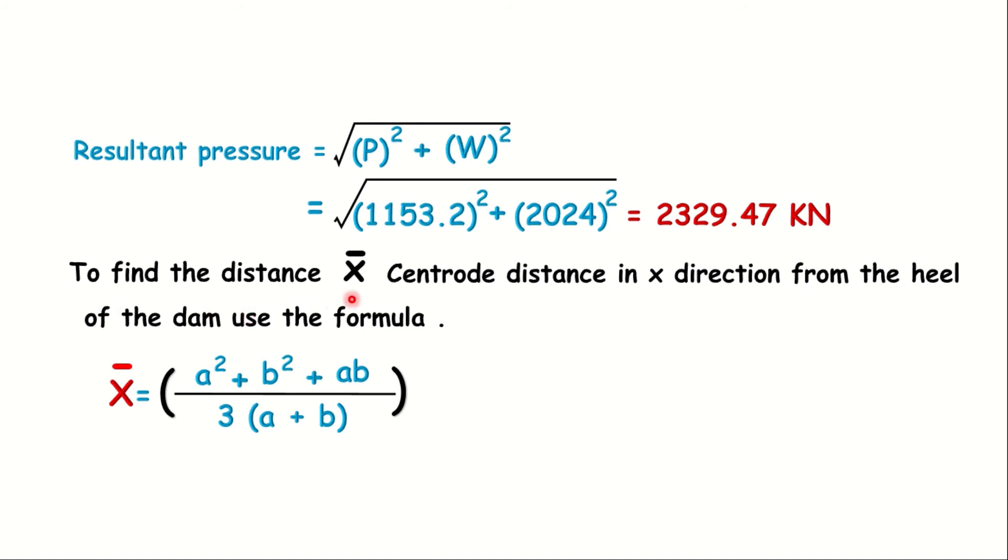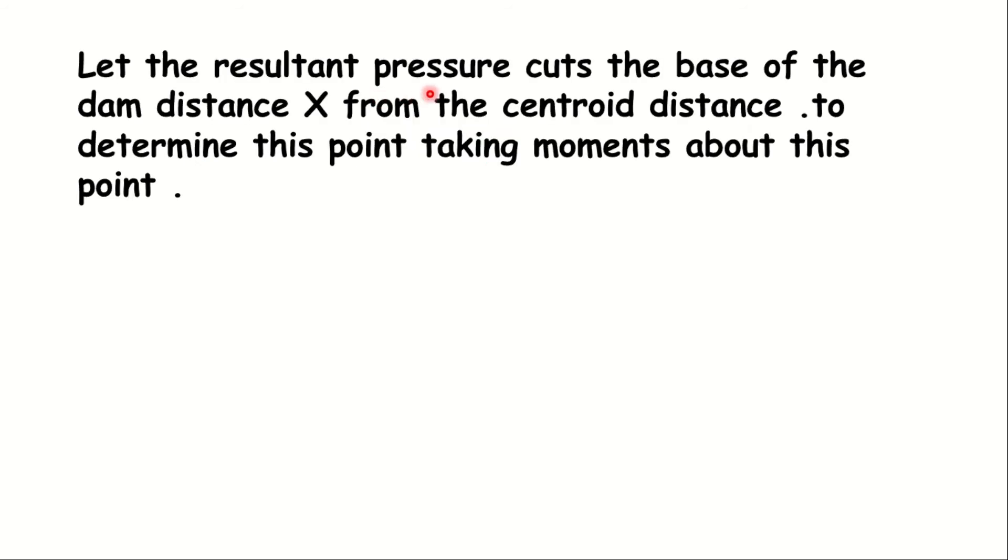X̄ = (3² + 8² + 3 × 8) / (3 × (3 + 8)) = (9 + 64 + 24) / 33 = 2.94 meters.